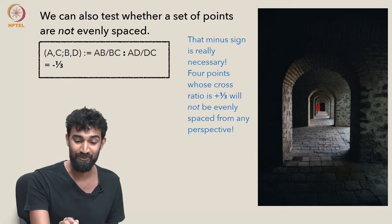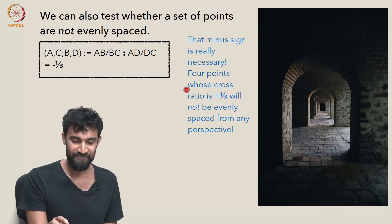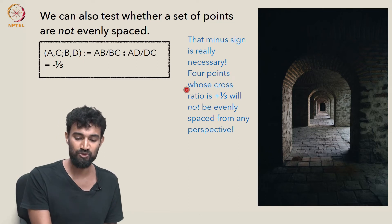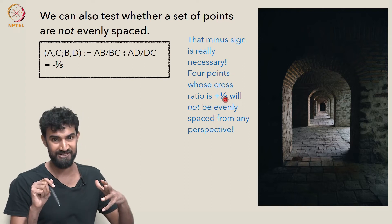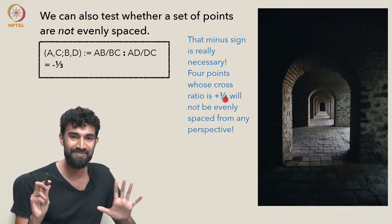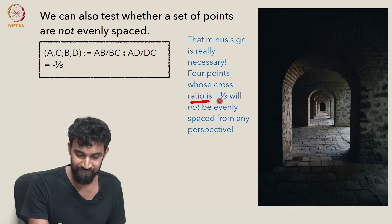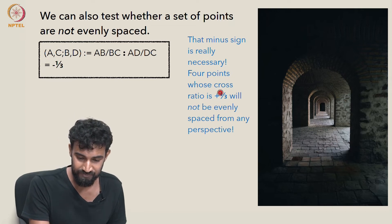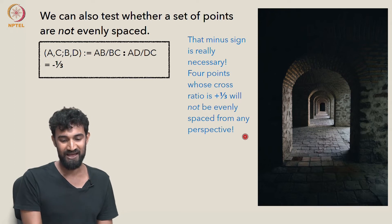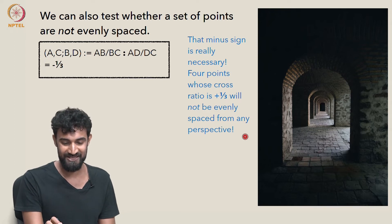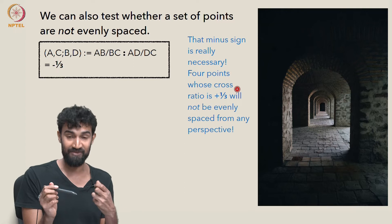In particular, that weird minus sign is really necessary. Four points whose cross-ratio is positive 1 third will not be evenly spaced under any perspective view. We're going to prove that very soon — it all comes out of something called the injectivity of the cross-ratio.